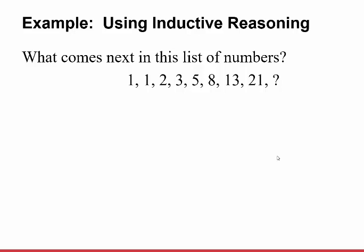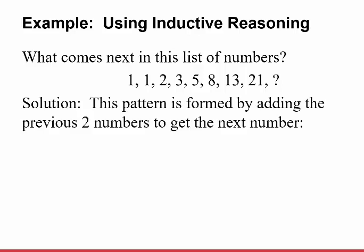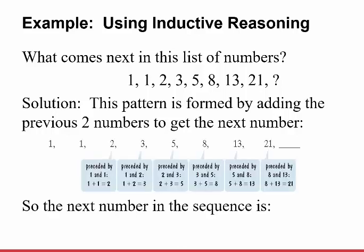Let's try this one — it's a little weird. What comes next in this list: 1, 1, 2, 3, 5, 8, 13, 21? The pattern is formed by adding the previous two numbers to get the next: 1 plus nothing is 1; 1 plus 1 is 2; 2 plus 1 is 3; 3 plus 2 is 5; 5 plus 3 is 8; 8 plus 5 is 13; 13 plus 8 is 21. So the next number is 21 plus 13, which equals 34.